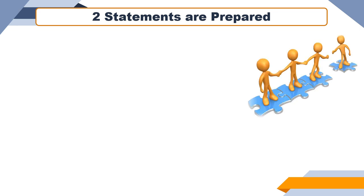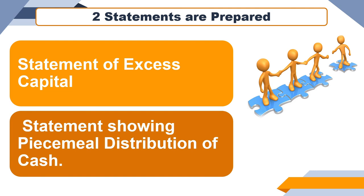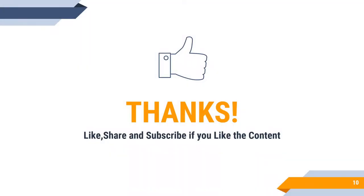While solving practical questions, two statements are prepared. The first is the Statement of Excess Capital, which identifies which partner gets paid and on what priority basis. The second is the Statement Showing Piecemeal Distribution of Cash, where we settle external liabilities first, then internal liabilities, and finally make payments to partners.